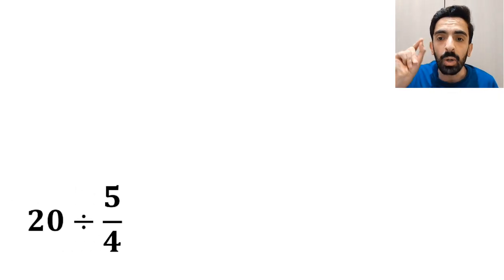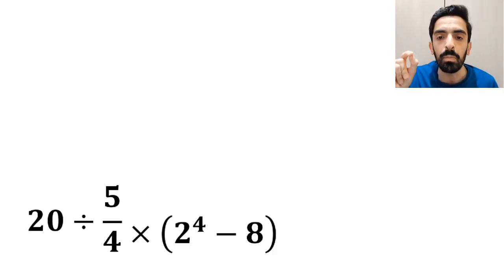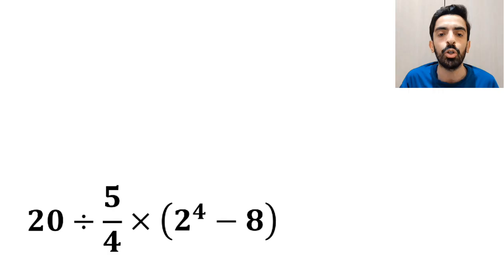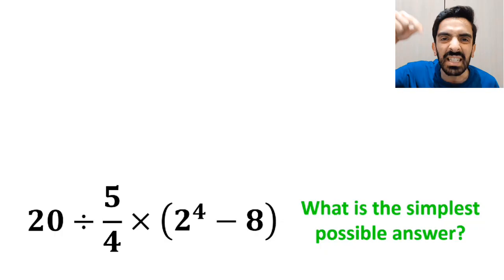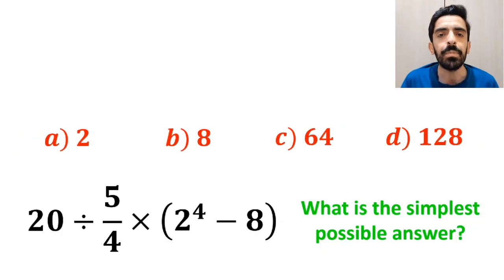If we have the expression 20 divided by 5 over 4 multiplied by open parenthesis 2 to the power of 4 minus 8 close parenthesis, then what is the simplest possible answer to this question? Which option do you think is the correct answer to this question?